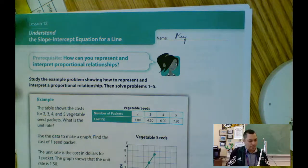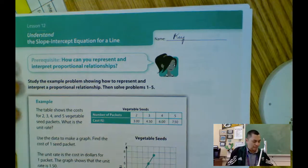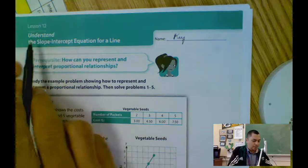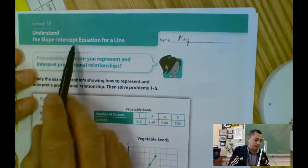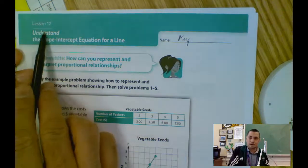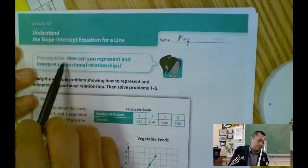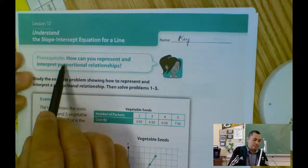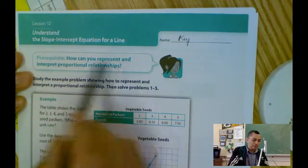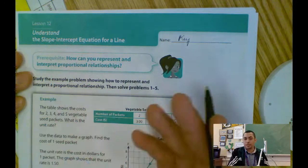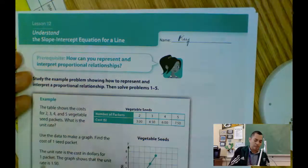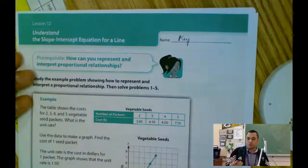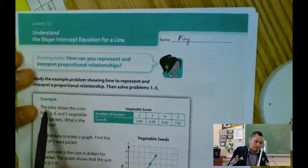We're going to continue with Lesson 12, Understand the Slope Intercept Form. This is Lesson 12 Homework. Remember, how can you represent and interpret proportional relationships? We're talking about proportional relationships. We're going to start with the example that we have.